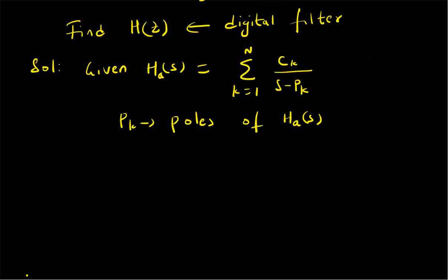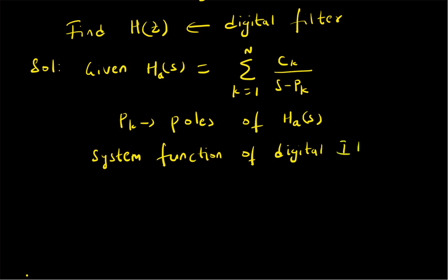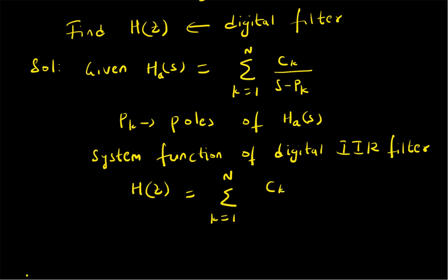When the analog filter's system function is written in this partial fraction form, the corresponding system function of the digital IIR filter is given by H(z) = summation k=1 to N of c_k divided by (1 - e^(p_k · T) · z⁻¹). This is the transfer function of the digital filter.